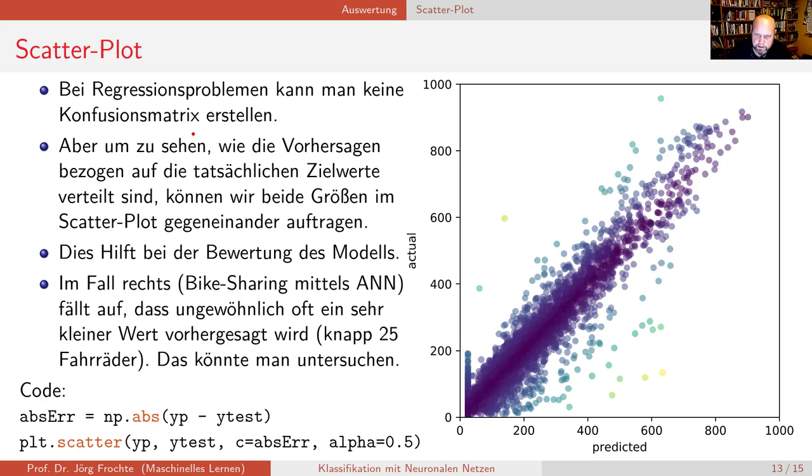Und zwar einmal das, was das Netz vorhergesagt hat versus das, was es hätte sein sollen. Dann, optimalerweise würde natürlich alles hier auf diesem Strich liegen, auf der Winkelhalbierenden. Das tut es auch anscheinend nicht. Ein paar Fehler macht man immer. Aber man kriegt schneller ein Gefühl für Besonderheiten im Datenset, die Sie sonst nicht bekommen. Denn wenn Sie an sowas denken, wie das Bike-Sharing-Dataset oder Boston House Price, da haben Sie ja nicht nur zwei Merkmale. Deshalb ist das ja eigentlich das Leichteste.